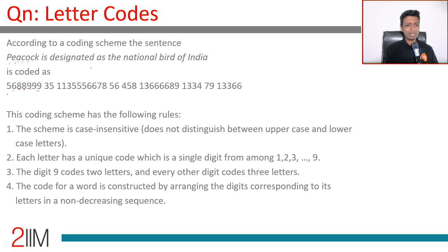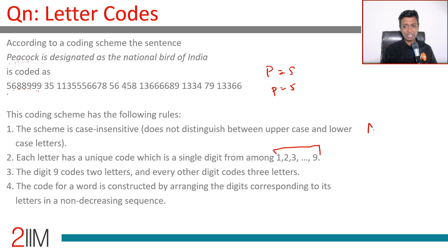The coding scheme has the following rules: it is case insensitive — capital P and small p are both coded as five. Each letter has a unique code which is a single digit from one through nine. There are 26 letters mapped to nine digits, and each letter maps to a unique digit.